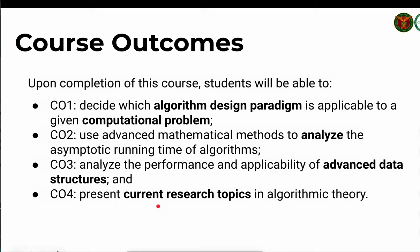Course outcome number three is to analyze the performance and applicability of advanced data structures. We will distinguish between basic data structures and the advanced data structures discussed in this course. Course outcome number four is to present current research topics in algorithmic theory. This is the difference between undergraduate and graduate courses — in graduate courses, we become familiar with the cutting edge of research on algorithms, including what different research labs are currently doing in terms of new algorithm designs or techniques. After this course, you may be interested in topics that could become the basis for your MS or PhD thesis.